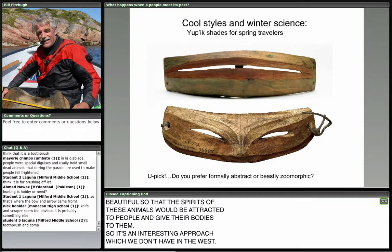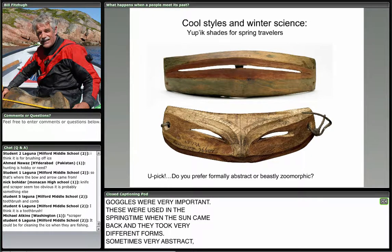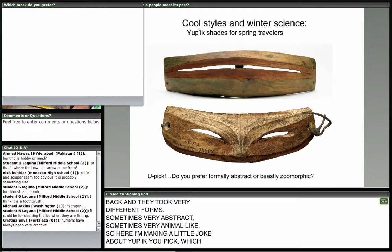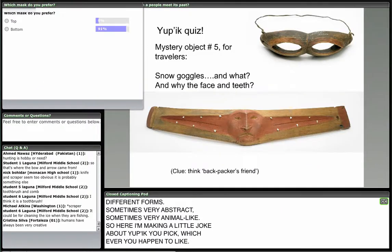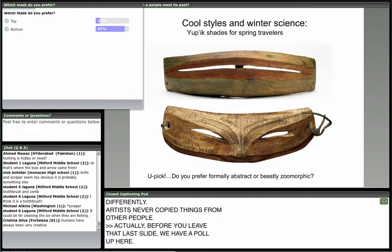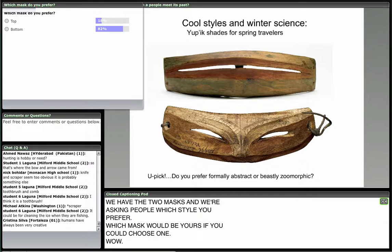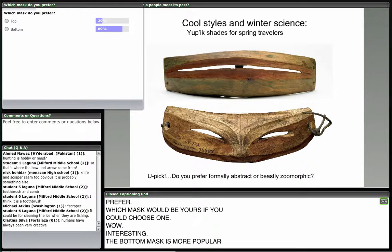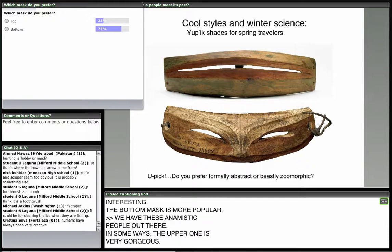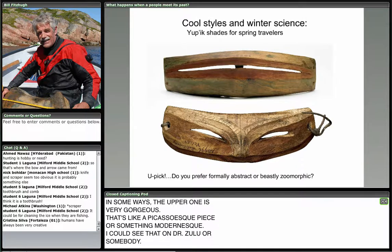Here I'm making a little joke — everybody made these goggles differently. All artists never copied things from other people. We have a poll up here showing two masks and asking which style you prefer — which mask would be yours if you could choose? The bottom mask is more popular! I'd say we have some animistic people in the audience. In some ways, the upper one is very gorgeous — like a Picasso-esque or modern piece. The other is pretty Star Trek. Now let's give the answer to the last science quiz. What you want to look at is the length of the tab at the end — they're quite different in length. These are net gauges, used to make the mesh on nets. For small fish you make little holes; for salmon you use the longer gauge for bigger mesh. Otherwise your mesh size would be all different — a very practical and important tool.